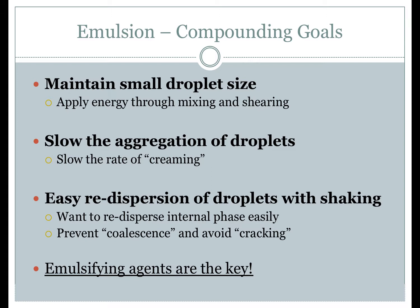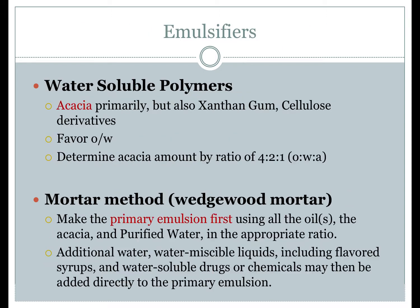The third compounding goal is to have a product that can be easily re-dispersed. While aggregation and creaming are unavoidable, the product should be formulated so that the internal phase readily and easily re-disperses to give a uniform emulsion when shaken. To summarize, the three goals are: to have small, fine internal phase droplets; to slow aggregation or creaming of those droplets; and to ensure the product can be easily re-dispersed when shaken.